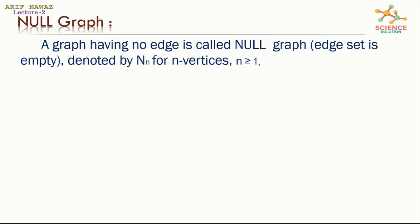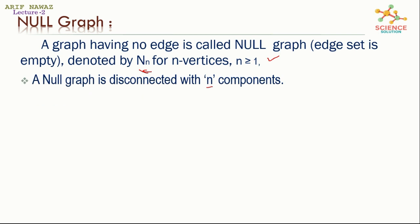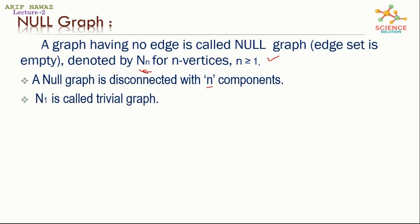What is the null graph? A graph having no edge is called a null graph. The edge set is empty, denoted by N_n for n vertices, where n can be greater than or equal to 1. A null graph is disconnected with n components, because there is no edge, so all the vertices are disconnected with each other.